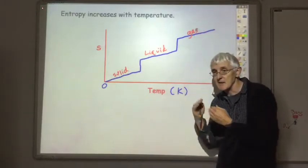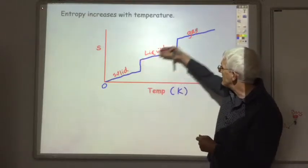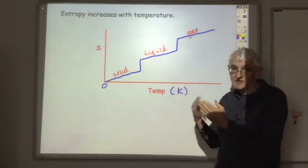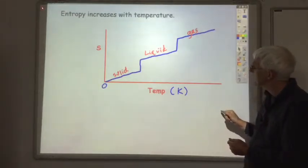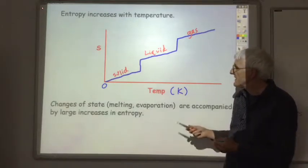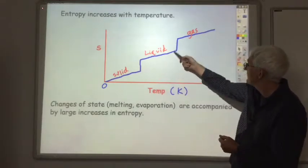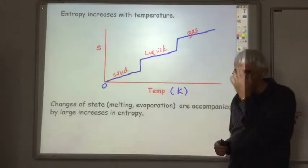So this diagram is similar for all compounds, although the temperature at which the melting and boiling takes place will obviously vary from substance to substance. So what to take away from this diagram is that changes of state from solid to liquid, from liquid to gas, are accompanied by very large increases in entropy.